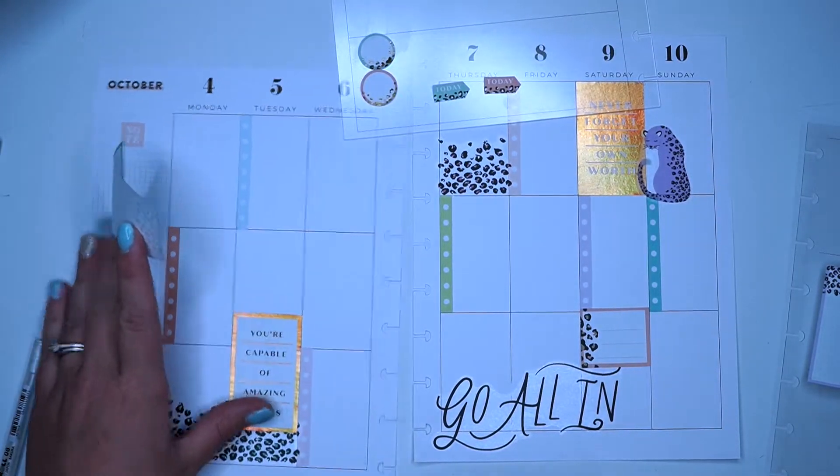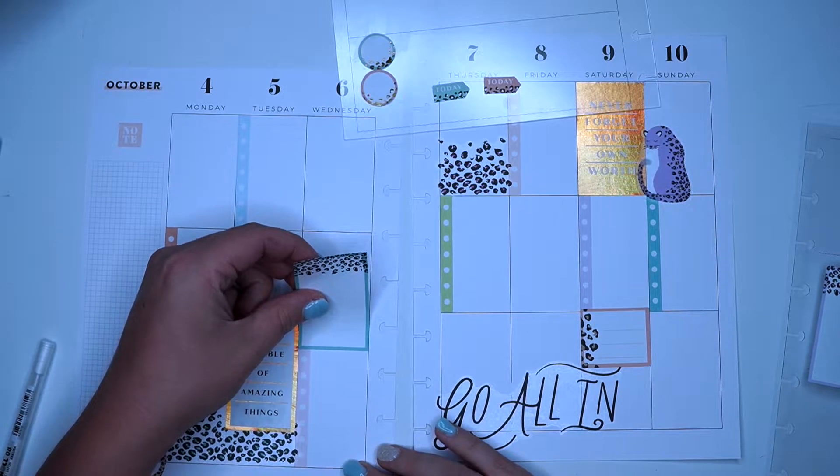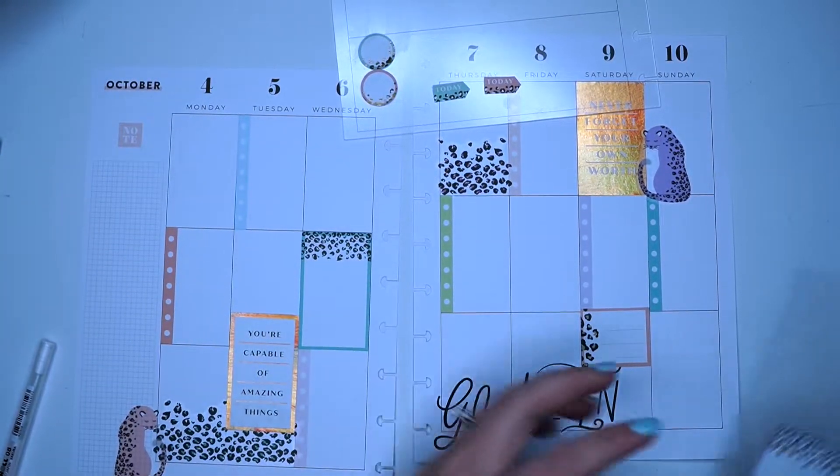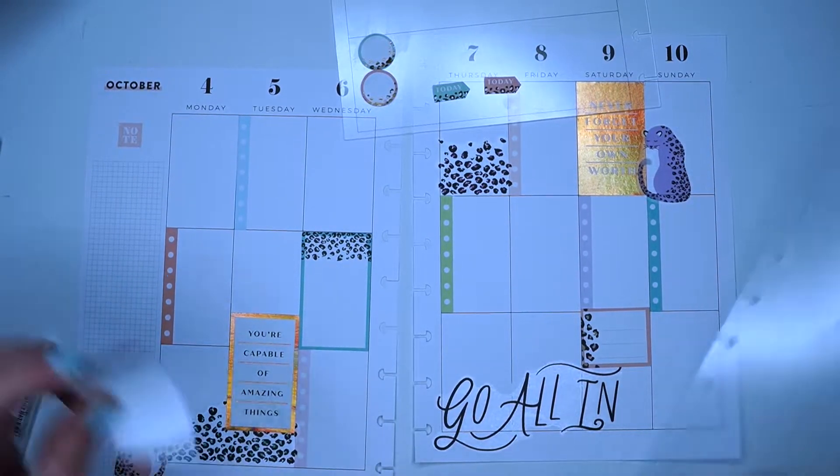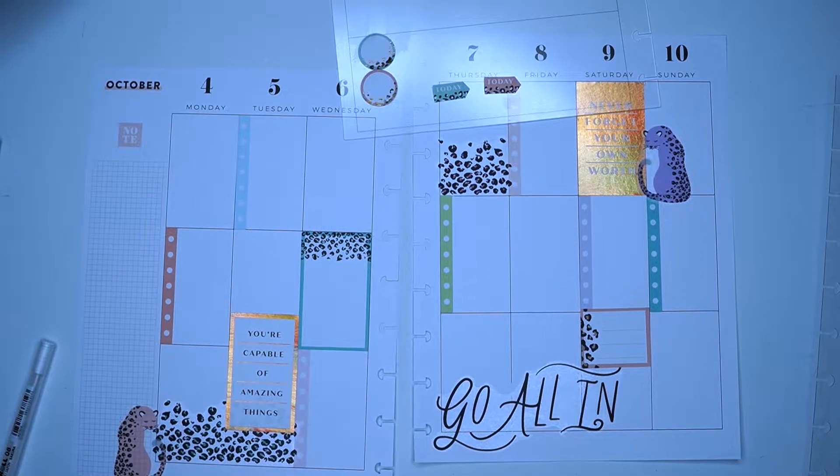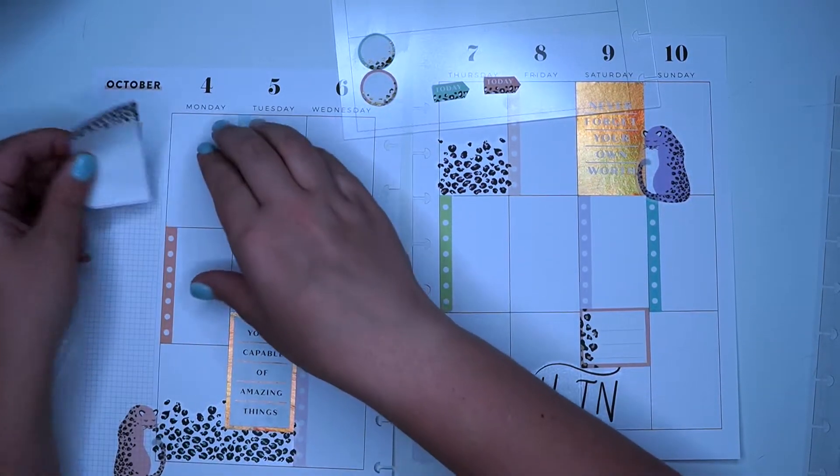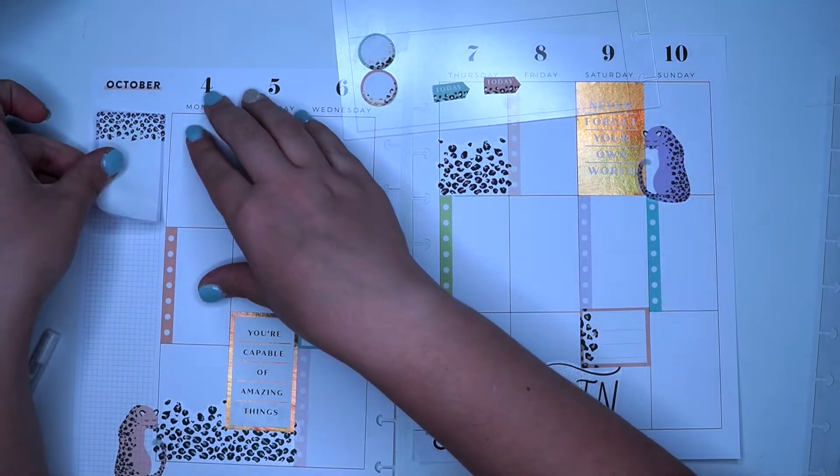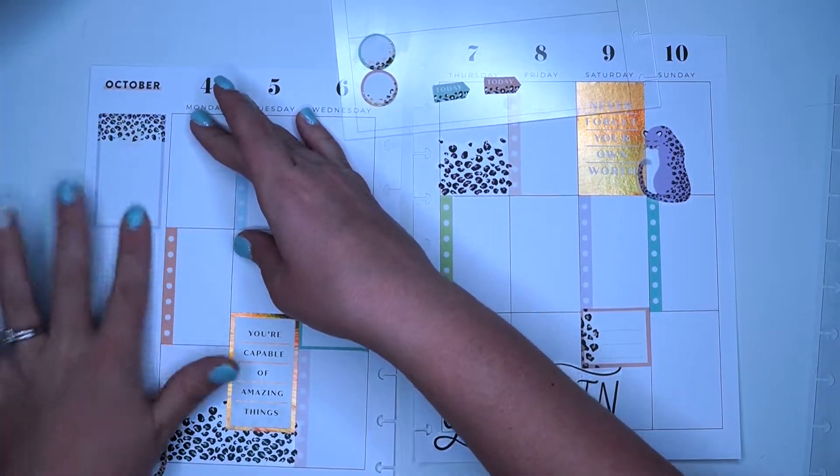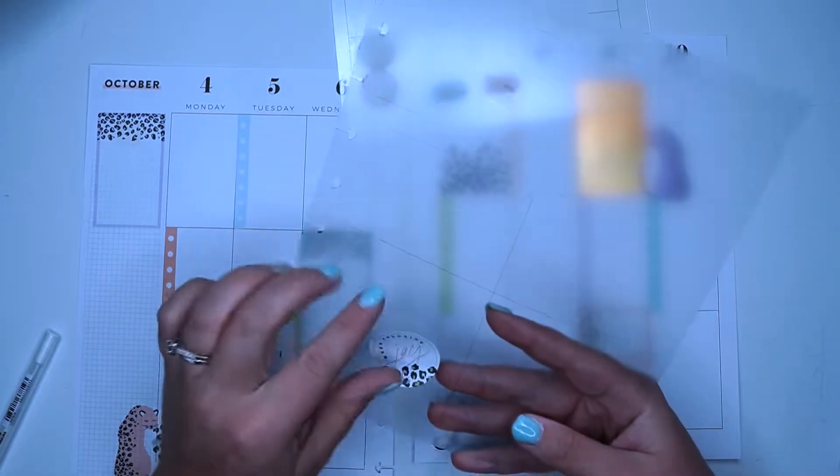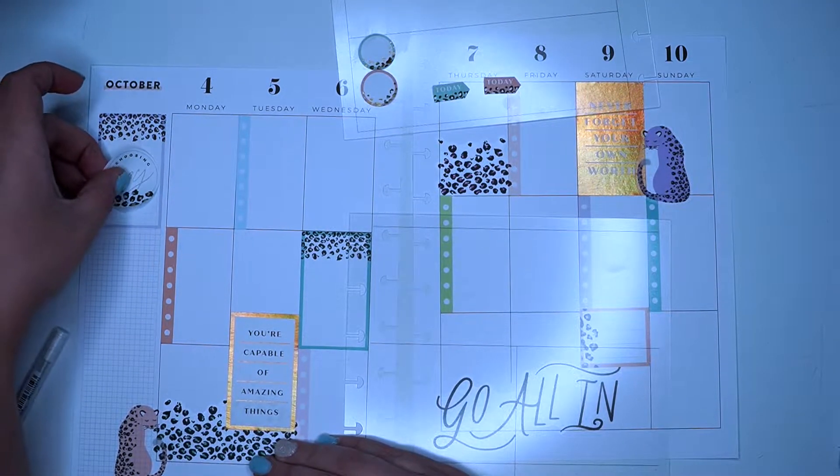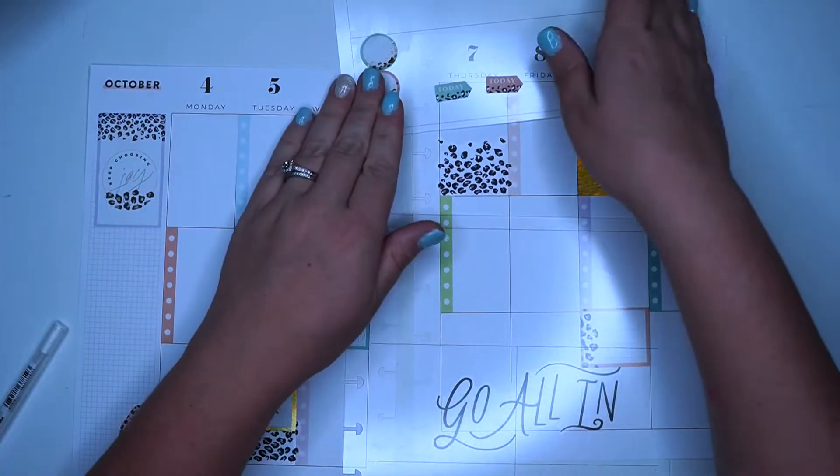And then what I'm going to do is take a small box and put it in the spread right here, so that I have room to write an extra thing on Saturday. Now I'm going to put this box right there. I'm going to put the purple box, I think up here, just to cover up that note section and then I'll write something for the week or put a cute quote in there. Keep choosing joy. Perfect.